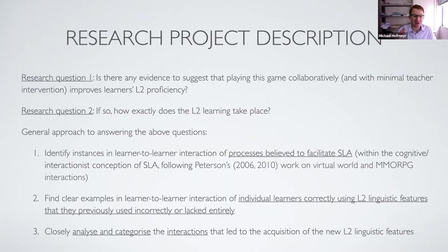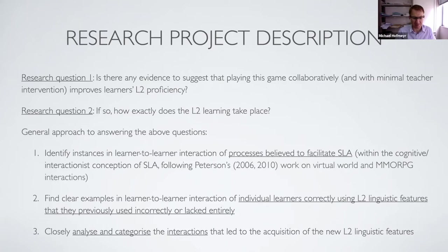I followed Peterson's earlier studies and tried to find clear examples where individual learners correctly — or start to correctly — use an L2 linguistic feature that they previously used incorrectly or lacked entirely. So point one is looking for indirect evidence of language learning based on a theoretical framework; point two is looking for direct evidence where you can see a learner use a new feature they clearly didn't know before; and point three is closely analyzing and categorizing the interactions that led to acquisition of new L2 features.